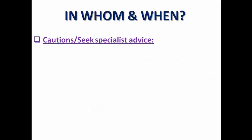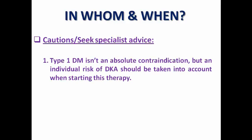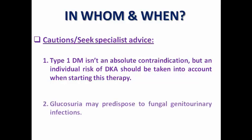There are situations where we need to be cautious while prescribing SGLT2 inhibitors. Type 1 diabetes is not an absolute contraindication, but the risk of diabetic ketoacidosis should be considered when starting them. Additionally, glucosuria caused by SGLT2 inhibitors — which inhibit glucose reabsorption in the renal tubules — may predispose patients to fungal genitourinary infections, especially in females. Patients should be advised to report any symptoms suggestive of urinary tract infections.